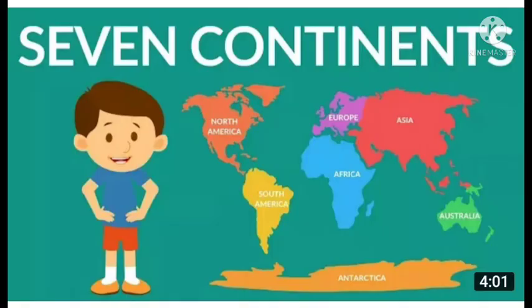There are seven continents on Earth. Try to see in the picture as well. They are: Asia, Australia, North America, South America, Europe, Africa, and Antarctica. Each continent has countries within it.